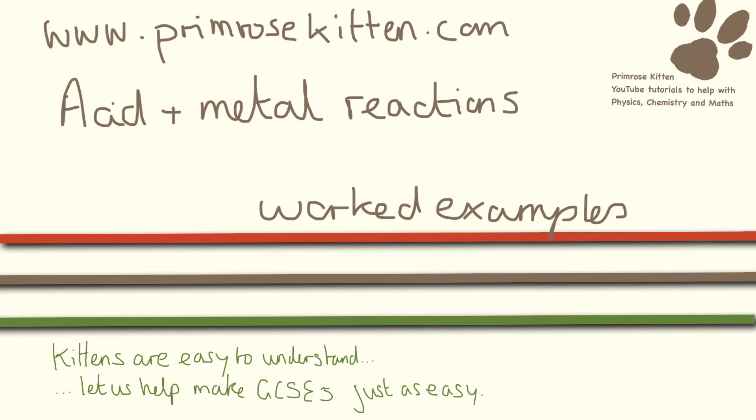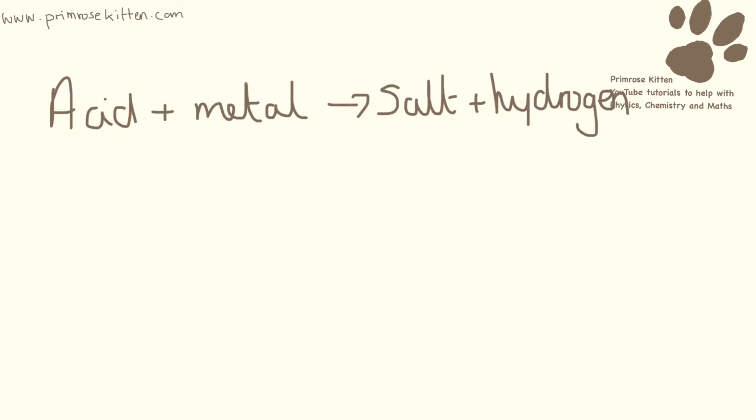Here are some worked examples of acid and metal reactions. You need to remember that when an acid reacts with a metal, we are always, always, always going to get a salt and hydrogen.